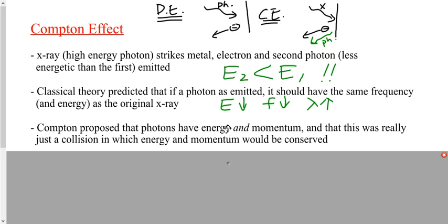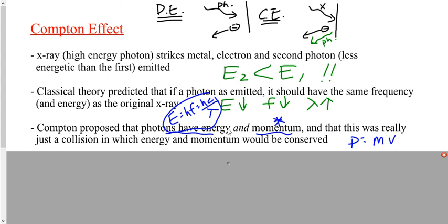By arguing that energy is conserved, Compton wasn't really telling us anything we didn't already know. The energy of a photon was described by Einstein a few years earlier. But the momentum of a photon — this is a tricky one. We knew the energy of a photon was hf or hc over lambda, nothing really new there. But nobody described the momentum of a photon before. How do you describe the momentum of a photon when the mass is zero? A photon doesn't have any mass — so how can it have momentum?